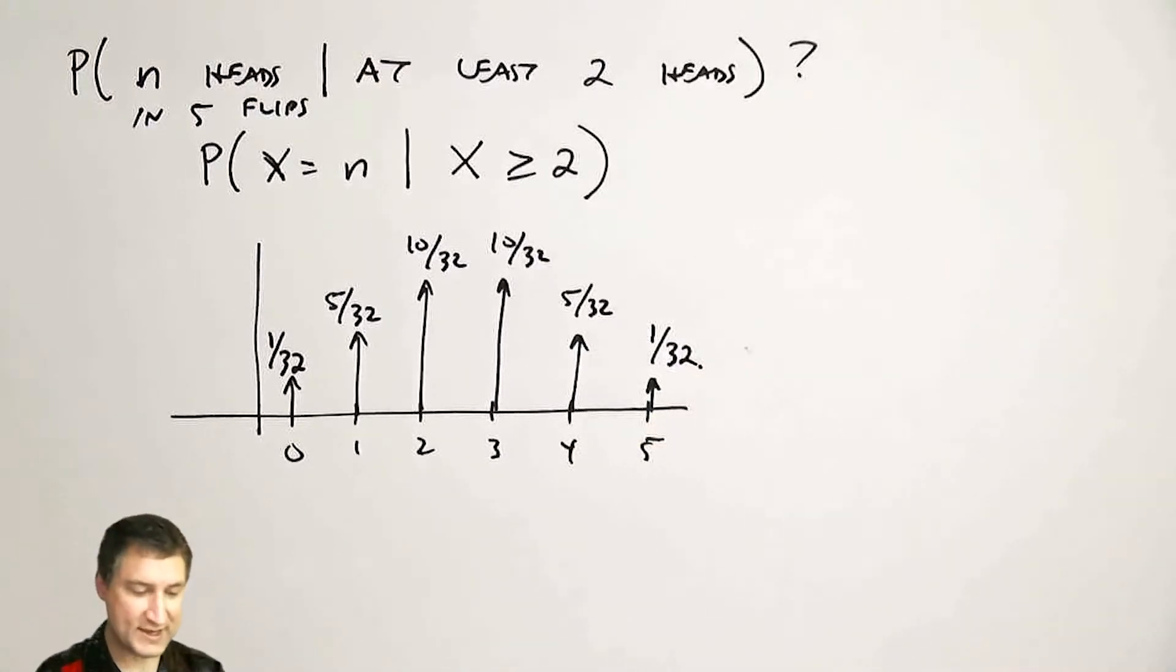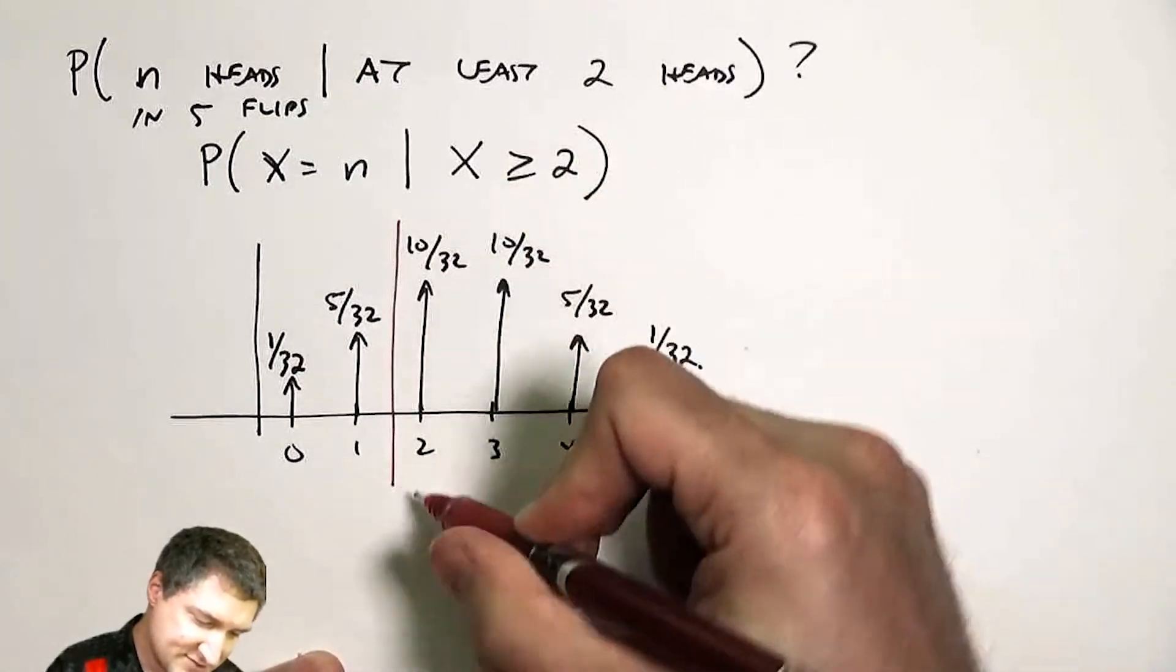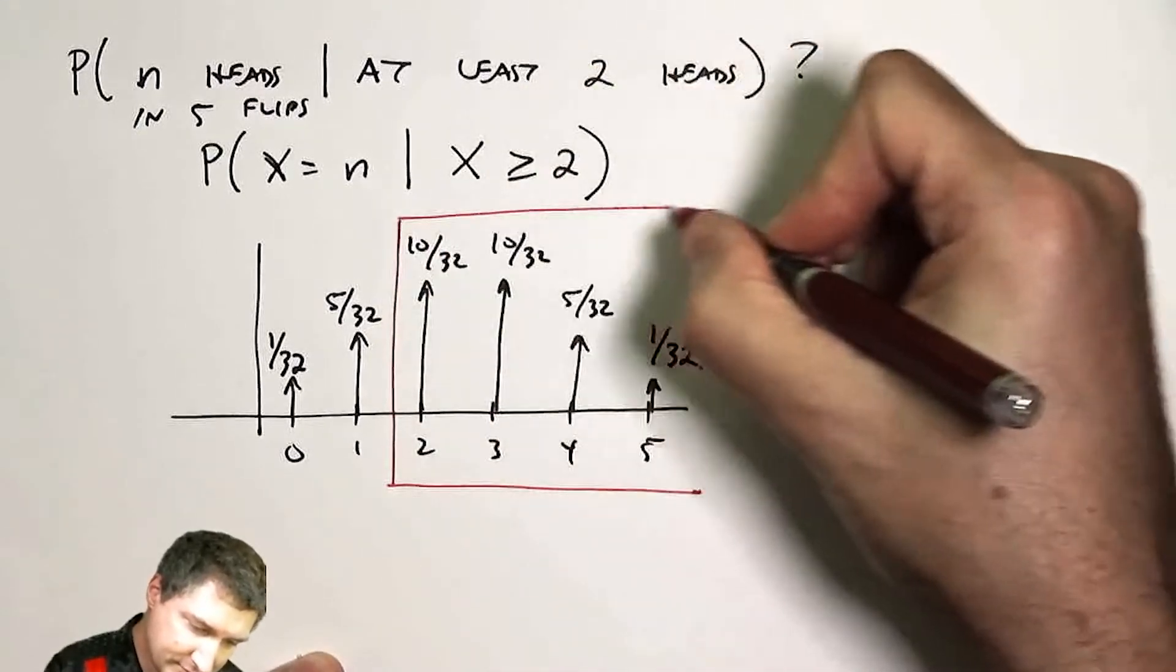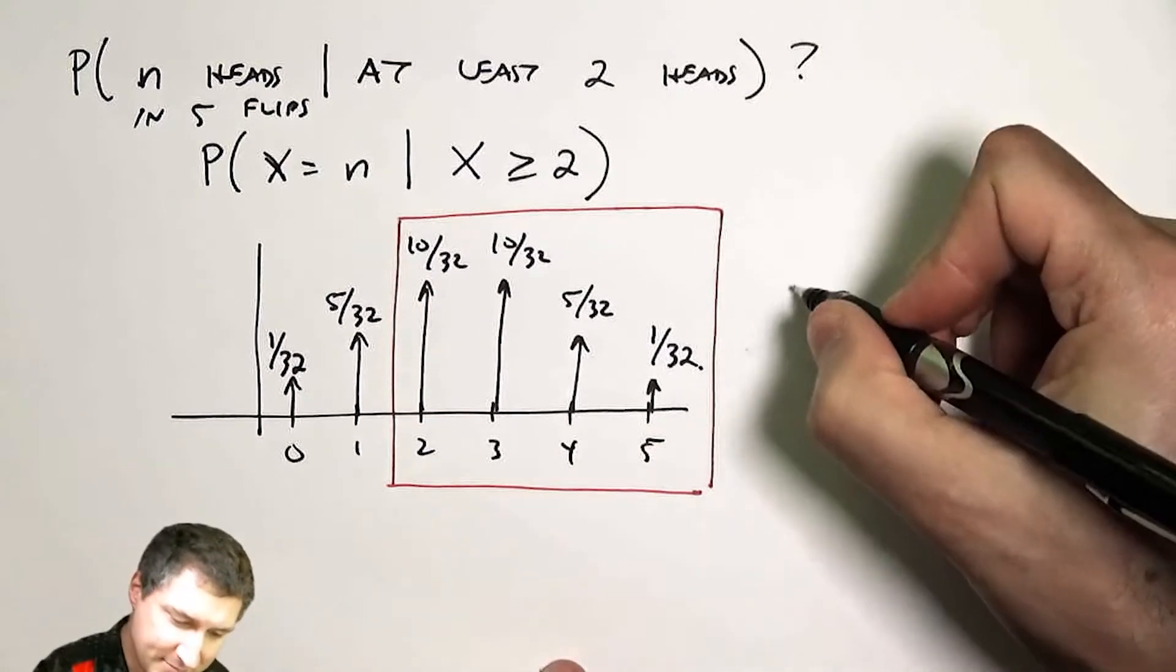Okay, so now I'm telling you that x is at least equal to two. So in some sense, this is the event I'm conditioning on. What's the probability of that event? Well, I would just add up the corresponding values of the PMF.